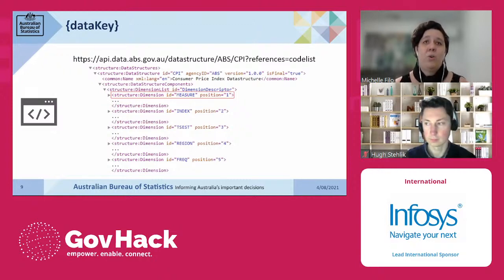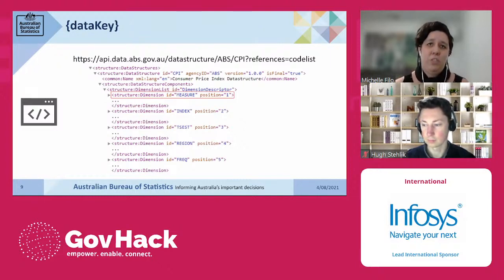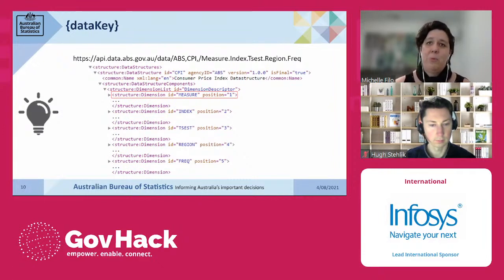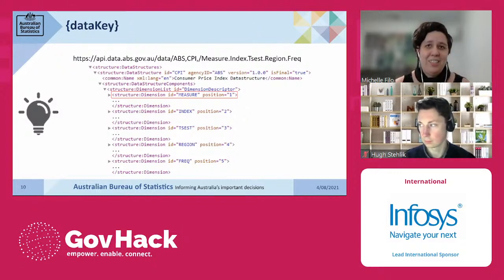We will use the references parameter, which lets us retrieve not just a specified structure from the API but some of the structures it references as well. We're going to specify the value code list, telling the API that we want to retrieve code lists, and use the URL on the screen to get this XML. This gives us the data structure with dimensions. The order of dimensions is given by their position. From the retrieved XML, we have an idea of the dimensions: measure, index, time series estimate, region, and frequency. For example, measure is a dimension and its order is one, so it goes first, then index, then time series estimate, and so forth.